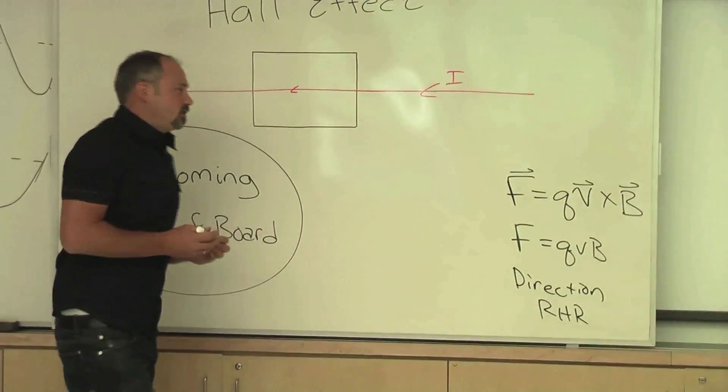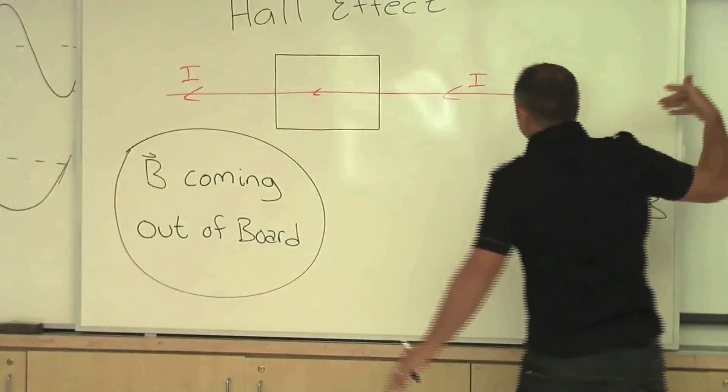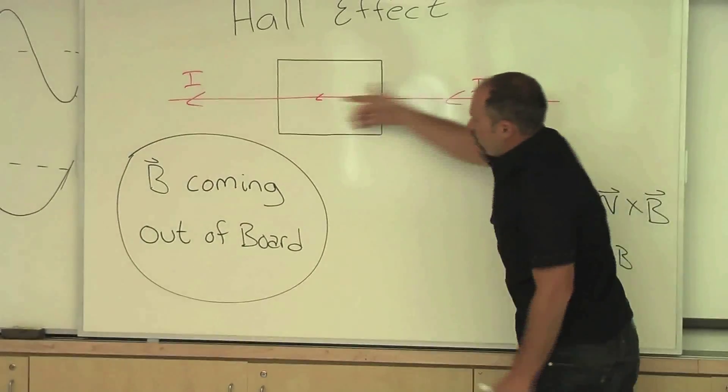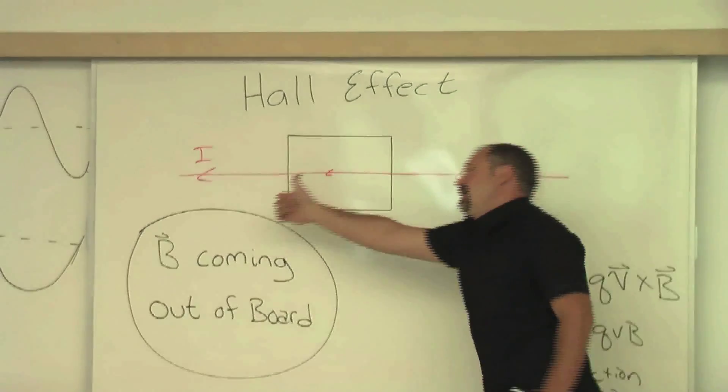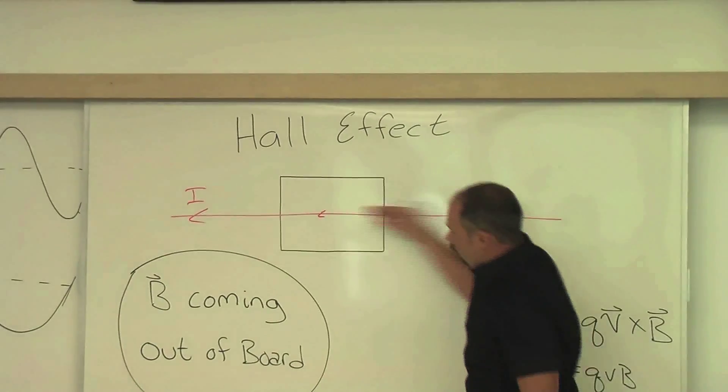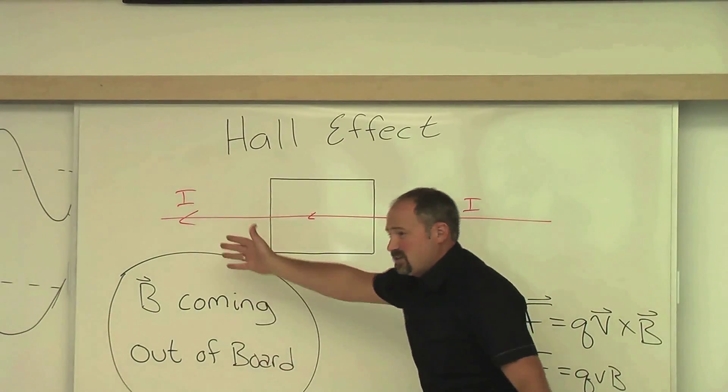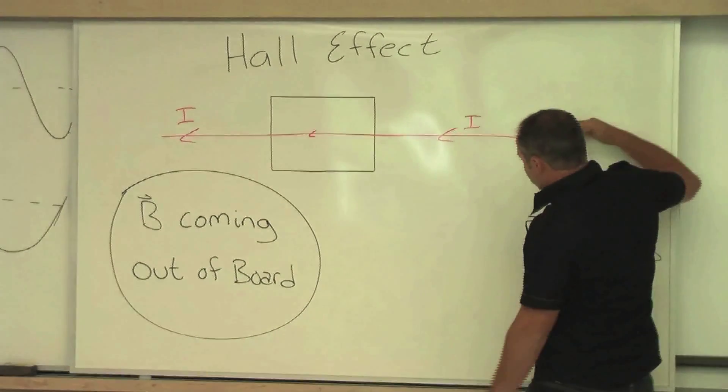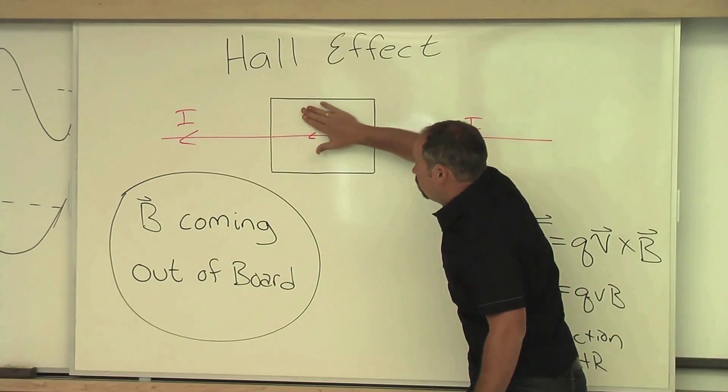So let's do that. We have electricity, that is, we have positive charge going this way, negative charge going that way. Remember, if electrons are flowing this way, it's the same thing as saying positive charges are flowing that way. So we have the currents going this way through the Hall chip.